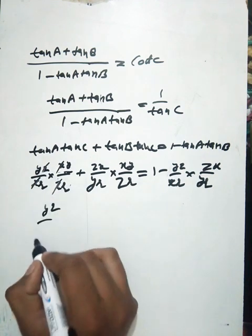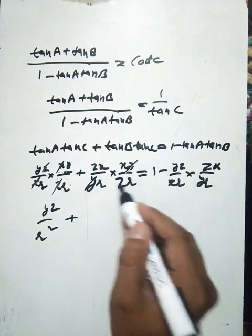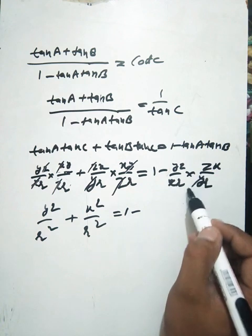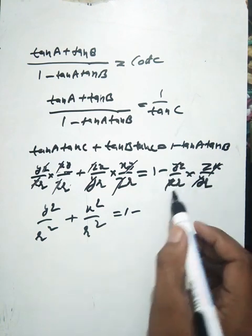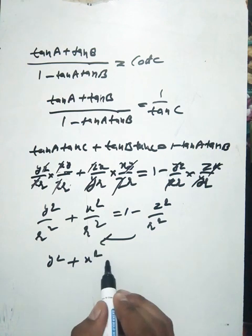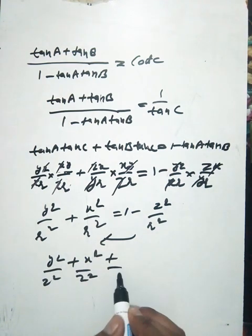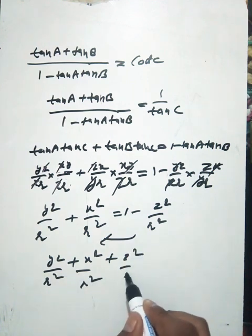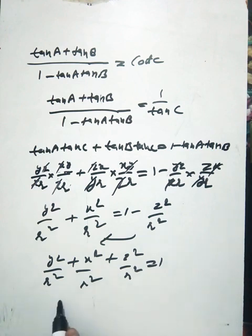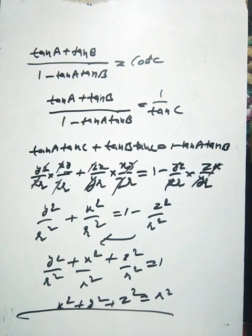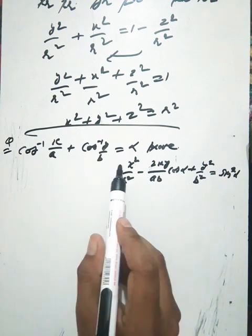Then we cancel, y square upon r square, x square upon r square. Here we have z square and then we have r square. Cross multiply, r square and multiply.